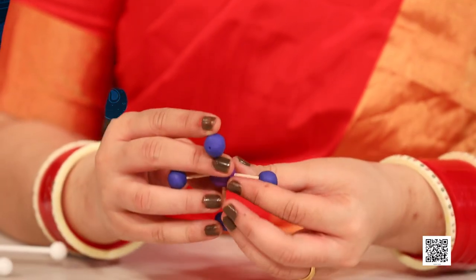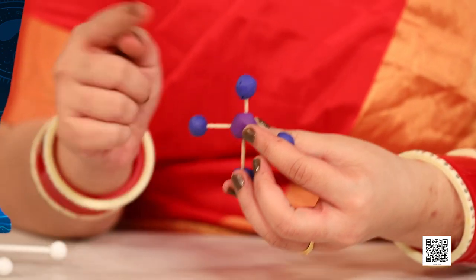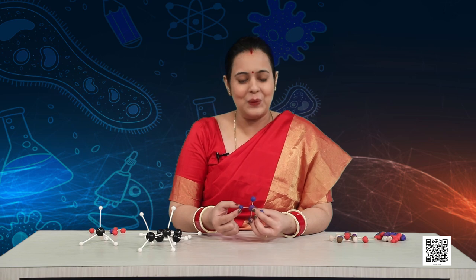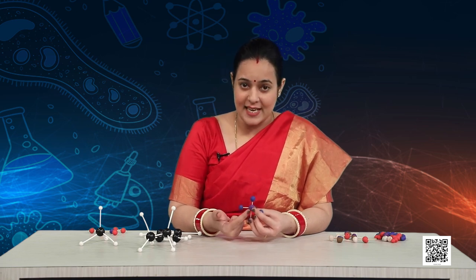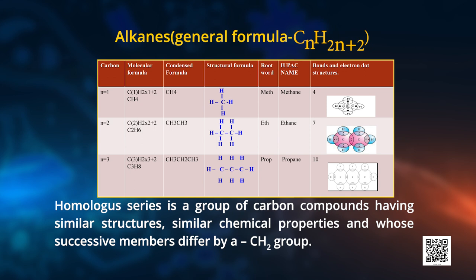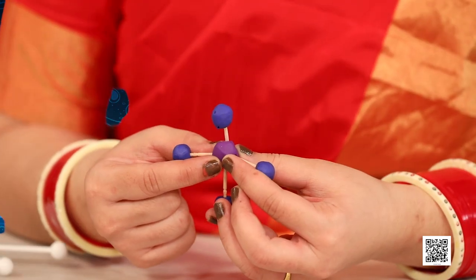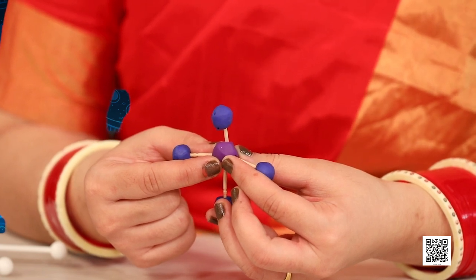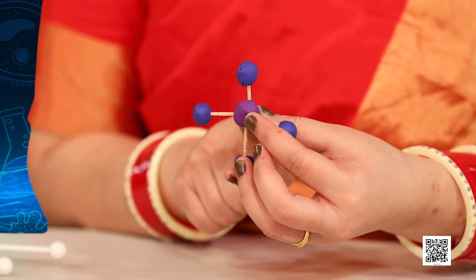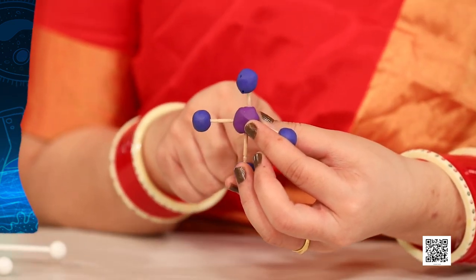When I talk about alkanes, as you can see in this clay and toothpick structure, the purple colored ball represents carbon. Carbon is usually represented with black balls, but here we are using different colors for fun. In the center it is carbon and these four bonds represent hydrogen. The general formula of alkanes is CnH2n+2, where n represents the number of carbon atoms. So in the first member, n=1, meaning one carbon with tetravalency satisfied by four hydrogens.